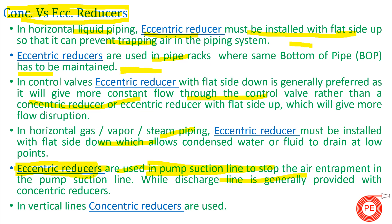In vertical lines, concentric reducers are generally used, as there is no issue of maintaining the bottom of pipe at the same elevation. This was a basic overview of the differences between concentric reducers and eccentric reducers; more detailed coverage will follow in future videos.